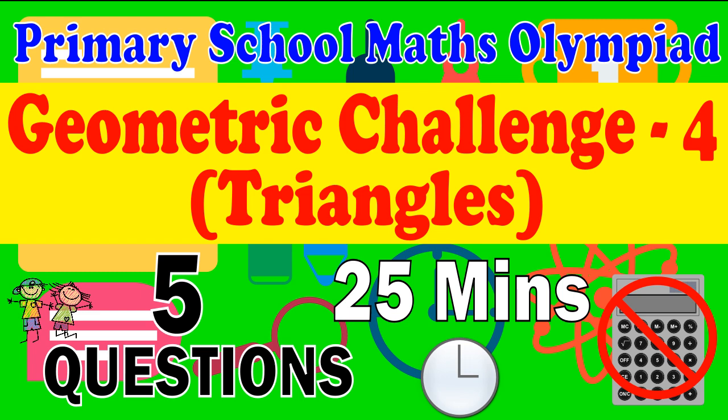Primary School Math Olympiad Geometric Challenge 4: Triangles. This is a challenge for Primary School Math Olympiad for questions related to geometry for triangles. There are five questions. The challenge is to complete them within 25 minutes.